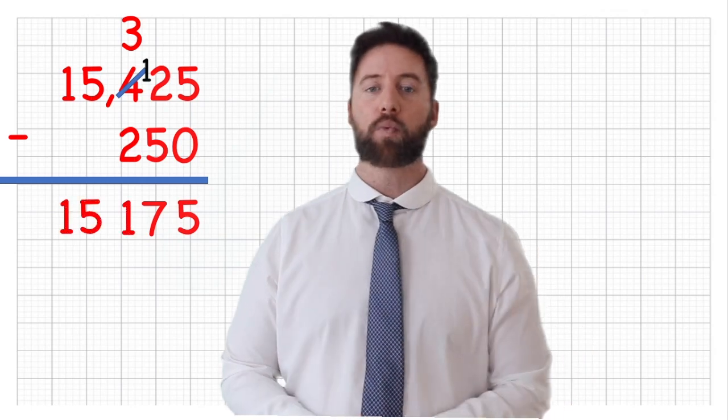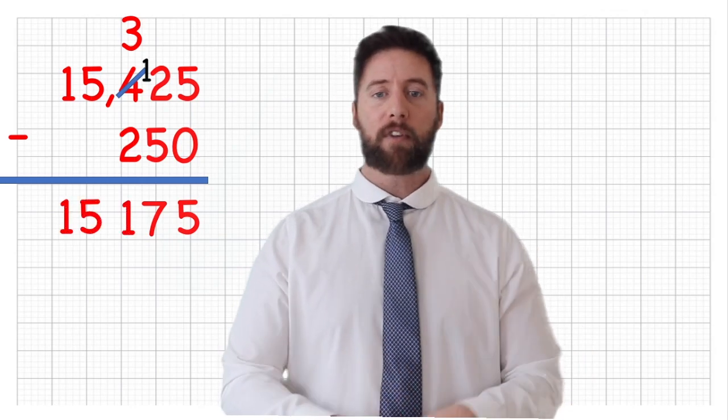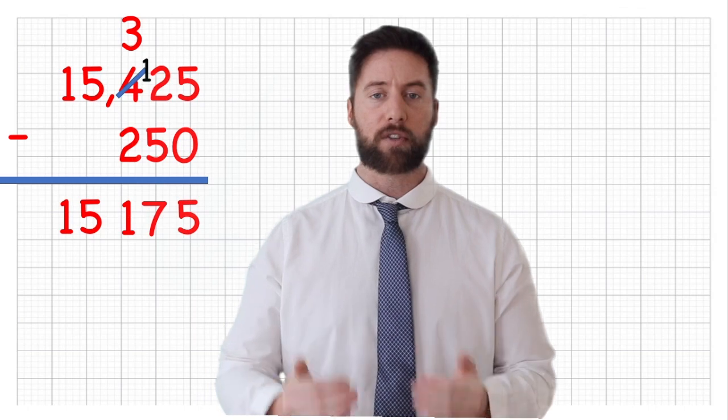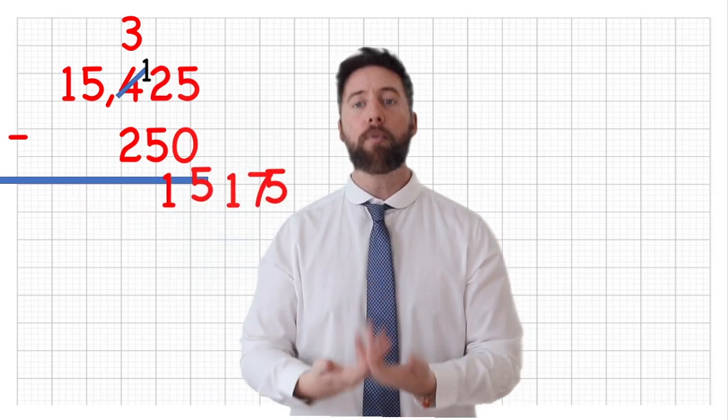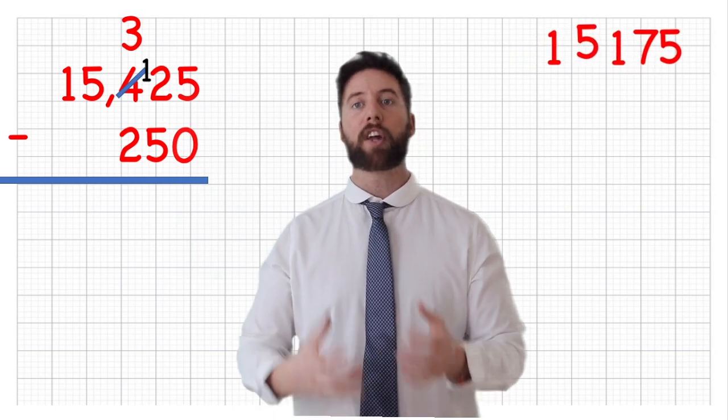Then I go to my next column. 3 subtract 2 is 1. Go into my next column. 5 subtract, well, nothing there, so it's just a 5. And again, 1 subtract nothing there becomes 1. So my new budget is £15,175.